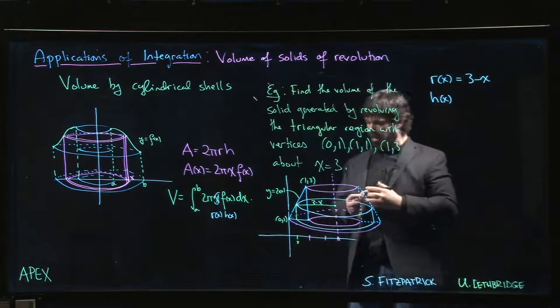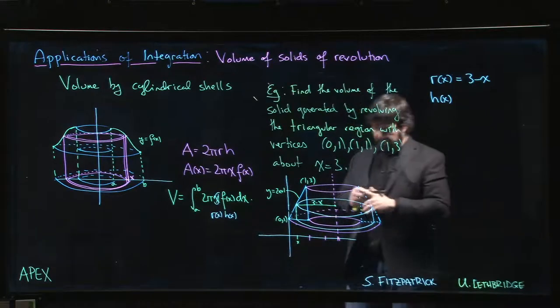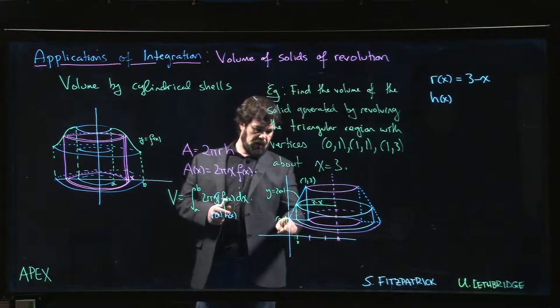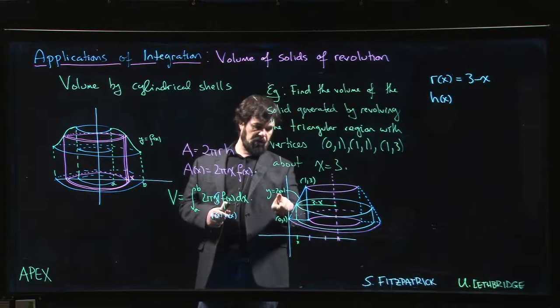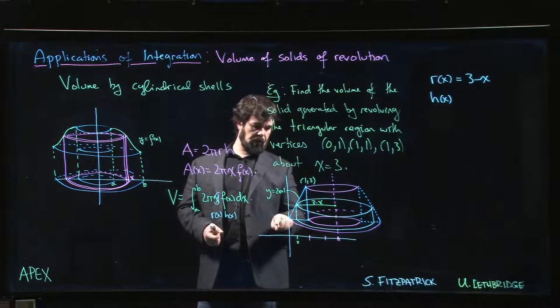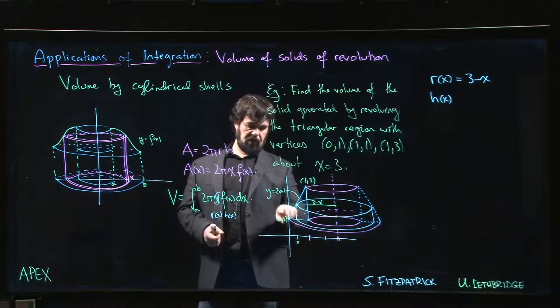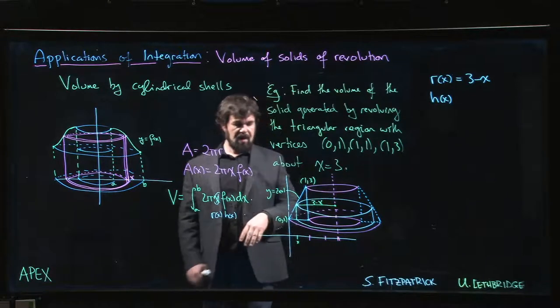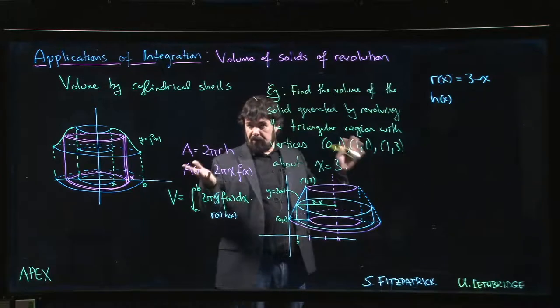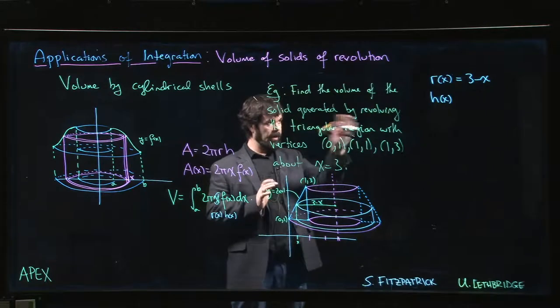Now for the height, you have to be careful. This is actually take two on this video because I overlooked something last time. The equation of this line here is y equals 2x plus 1, right? Slope 3 minus 1 is 2, 2 over 1. So the slope is 2, intercept is 1. So y equals 2x plus 1. Last time I wasn't thinking carefully, I just threw that in as my function. I said, hey, f of x is 2x plus 1, right? That's the height.